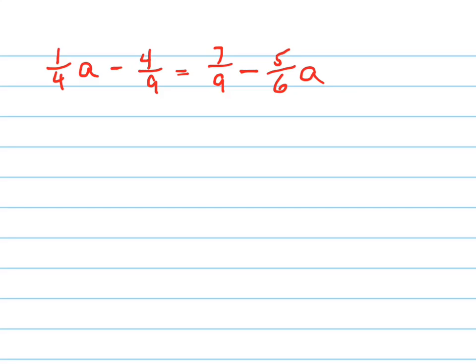The first thing that I always suggest kids do, and you might as well learn it young, this is an algebra 1 problem, is to clear fractions. Because it's a lot easier to solve a problem if you get rid of the fractions. And the way you do that is you multiply by the least common denominator.